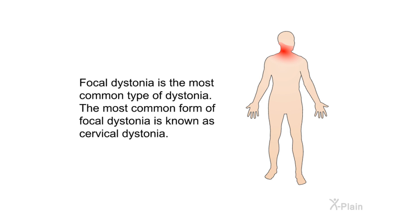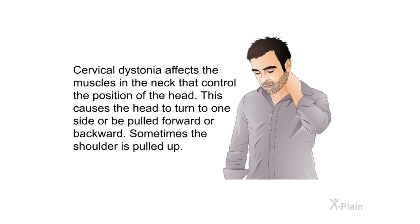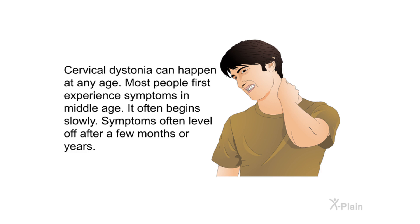Focal dystonia is the most common type. The most common form is cervical dystonia, which affects the muscles in the neck that control the position of the head. This causes the head to turn to one side or be pulled forward or backward, and sometimes the shoulder is pulled up. Cervical dystonia can happen at any age, but most people first experience symptoms in middle age. It often begins slowly, and symptoms often level off after a few months or years.